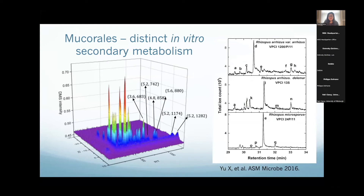We've also looked at other molds because it would be even better if we could tell aspergillosis from mucormycosis and really get a specific pathogen identification so we can target therapy. For mucorales in vitro, at least, there's a totally distinct secondary metabolism compared to aspergillus, and it's different by species. You can see this in the three most common species that cause human mucormycosis: Rhizopus arrhizus, var. delemar, and Rhizopus microsporus. There is a difference in each of these in their metabolites — their sesquiterpene fingerprint.